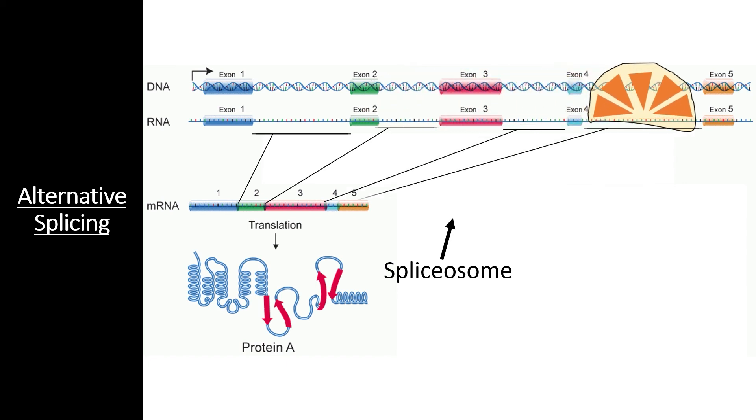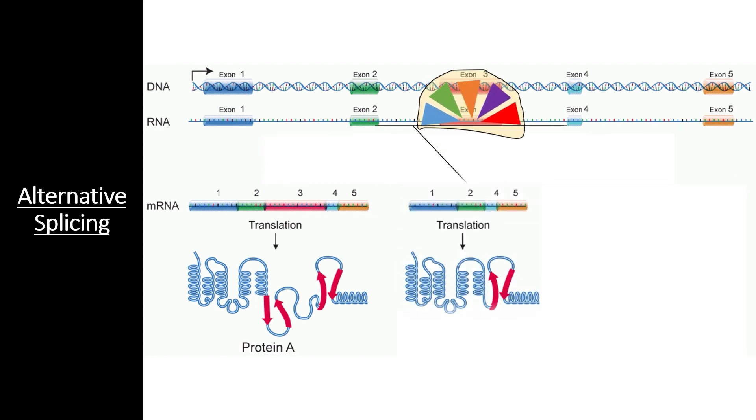However, this process is loaded with complex variations. Each small nuclear RNA is genetically inherited with complex mutations. Plus, the proteins that create the spliceosome complex are also subject to variation. This can create spliceosomes that cut out certain exons entirely, leading to different isoforms of the same protein.